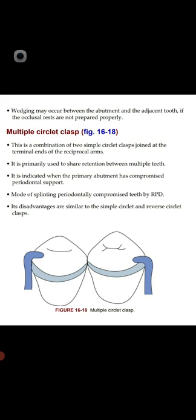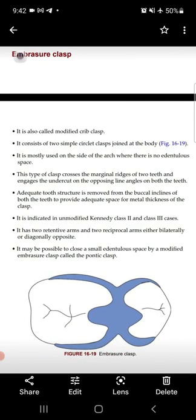Summary so far: if the retentive undercut is away from the edentulous area in a tooth-supported denture, use the simple circulate clasp. If it is a distal extension case with the retentive area near the edentulous area, use the reverse circulate clasp. If the primary abutment teeth are periodontally compromised, use the multiple circulate clasp on multiple teeth.